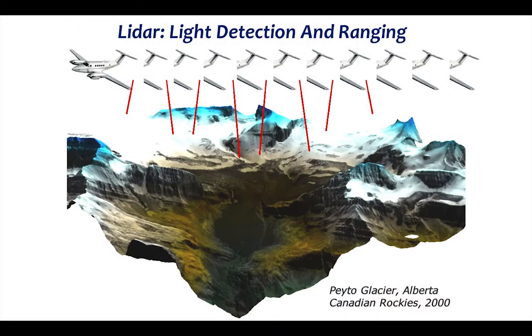There is one common element that all these monitoring challenges possess, and that is dimensionality. Whether it is snowpack depth, glacial area, glacial volume, timber volume, or even floodplain carrying capacity, these are all measurable attributes of the landscape. What I am going to advocate for is that airborne LiDAR — a three-dimensional monitoring technology — is a very good tool for that kind of monitoring.